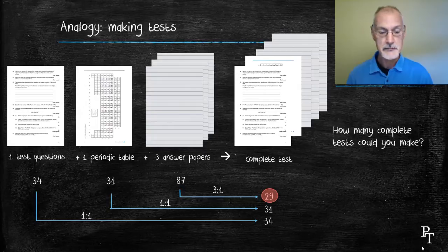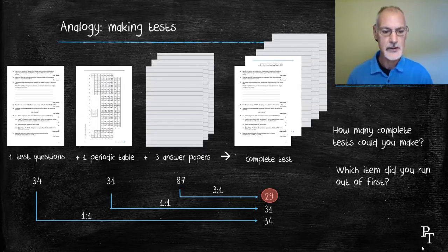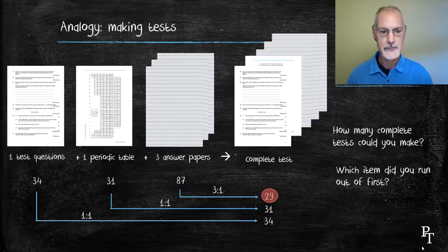Which item did I run out of first? Well, in this particular case, the 29 tests was limited by the answer papers. I call that my limiting item, and the other two are my excess items. I have extra of those.